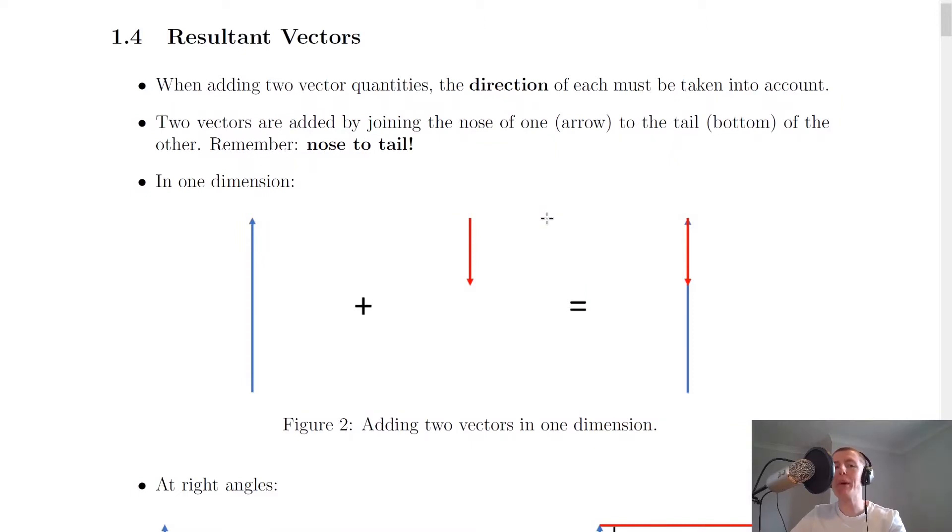Okay, so we're going to start by looking at what happens when you add two vectors together, and then we're going to look at resultant vectors. When adding two vector quantities together, you should remember that the direction of each must be taken into account. We always draw vectors as a straight line with an arrow pointing in the direction that the vector would be going in.